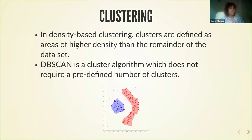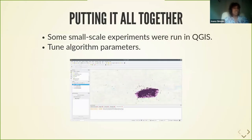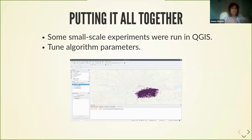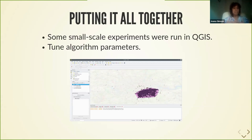We ran a lot of experiments in QGIS, doing the complete pipeline: running the clustering algorithm and then on the results running the convex hull. This was a very important step in the entire process because it allowed us to fine-tune the algorithm parameters in an environment that is very friendly — you have some degree of interactiveness and a map where you can visually inspect your inputs and outputs. It's very easy to debug and understand what is going on, which was particularly important for tuning the DBSCAN algorithm.